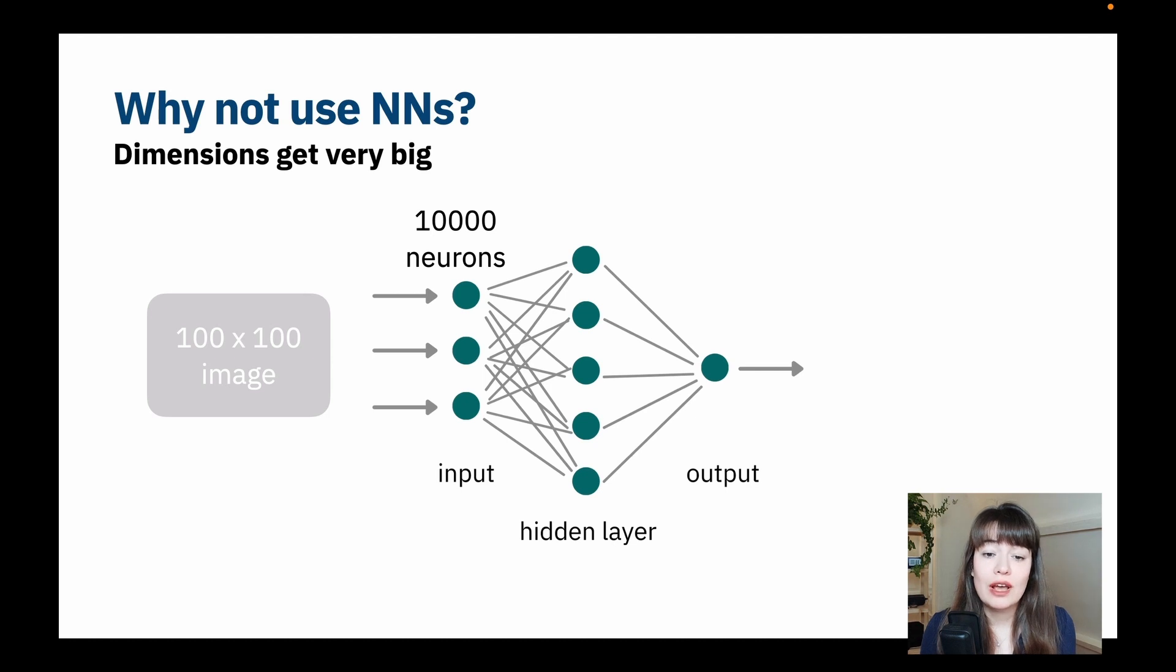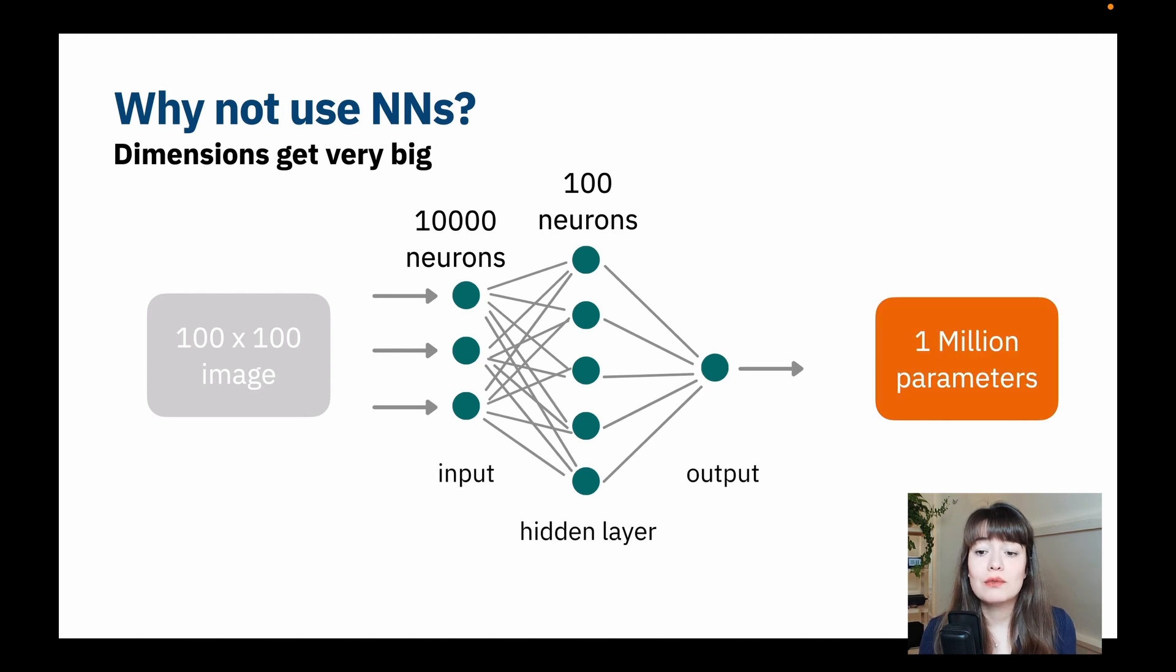then that means you would have to have 10,000 neurons in your input layer. And let's say on the next hidden layer, you have only one hidden layer, and in that hidden layer, you have only 100 neurons. You already will have more than 1 million parameters that you need to train. That is a lot of parameters to train, and that's only one hidden layer. You very likely will need more than one hidden layer and more than 100 neurons per hidden layer.